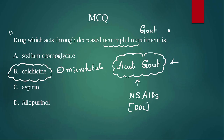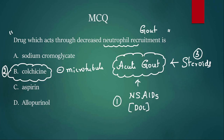Three drug classes are given for acute gout: NSAIDs, colchicine, and steroids. The question sometimes asks which NSAID should not be given in acute gout — the answer is aspirin, because aspirin itself increases uric acid and worsens gout.